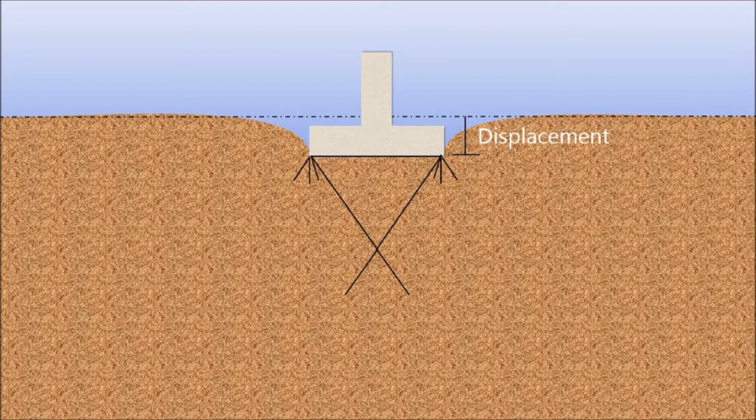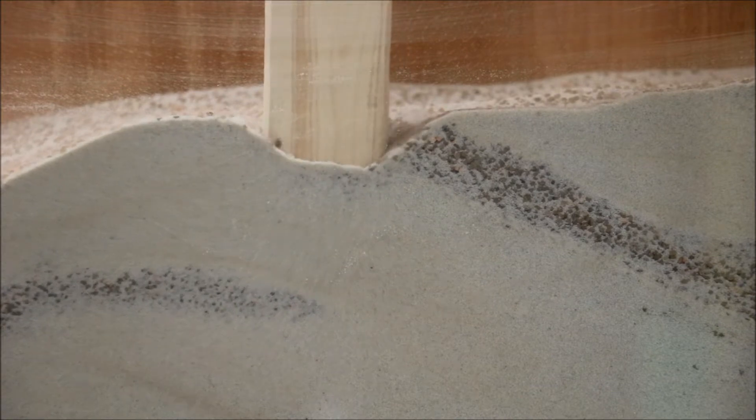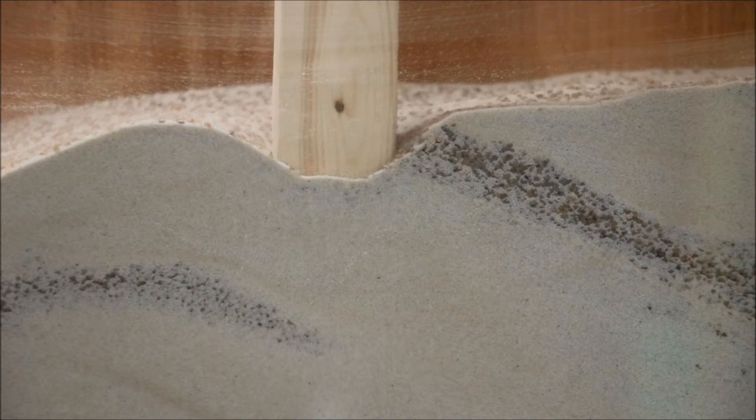Failure develops gradually in this setting due to the high compressibility of these soils. Little to no soil disturbance is seen at the surface when punching shear occurs, but structures experience high levels of settlement.